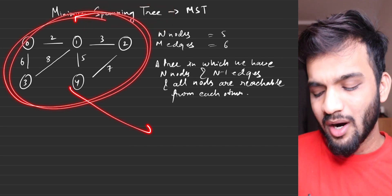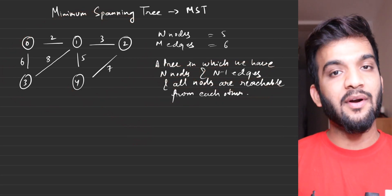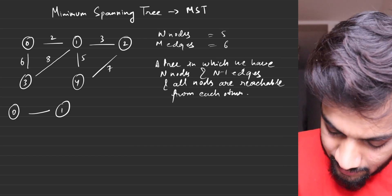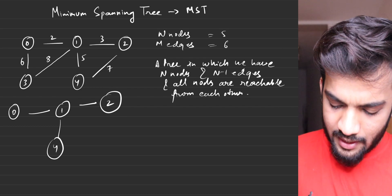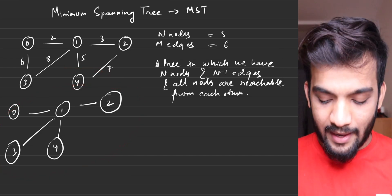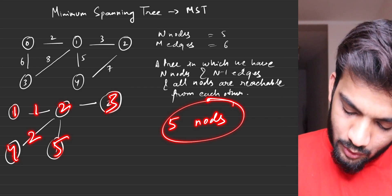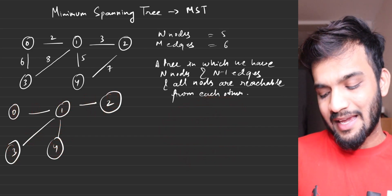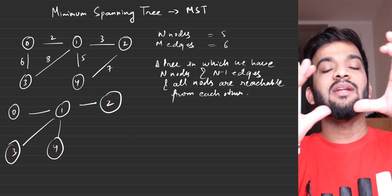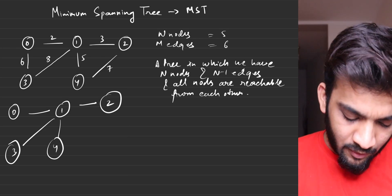From the given graph, you draw a tree such that it has all n nodes, n minus one edges, and all nodes are reachable from each other. For example, one spanning tree could be: take node 0, connect it with 1, then 4, then 2, then 3. This gives five nodes and four edges, with all nodes in a single connected component — so this is a valid spanning tree.